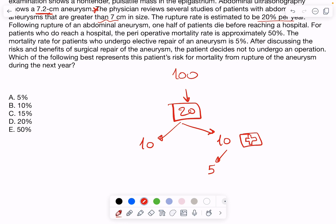That's another 5. So, the total who actually die of aneurysm rupture every year of those people whose aneurysm is greater than 7 centimeters is 10 plus 5. That's 15%. So, this is the correct answer.